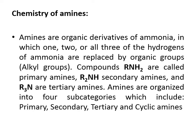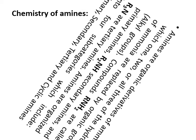What is amine? Amines are organic derivatives of ammonia in which one, two, or all three hydrogens of ammonia are replaced by an organic group or alkyl group. Compounds having R-NH2 are called primary amines. Compounds having the general formula R2-NH are called secondary amines. Compounds with R3-N are tertiary amines. Sometimes you could also have quaternary amines, where you have four groups attached, carrying a positive charge. Amines are organized into four subcategories: primary, secondary, tertiary, and cyclic amines.